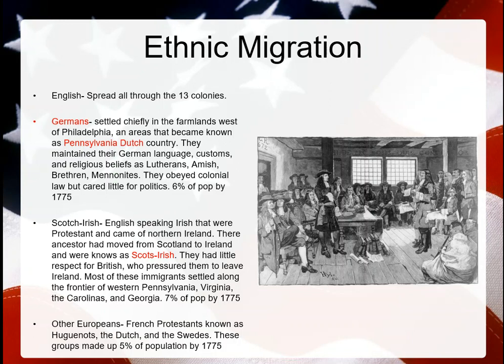Other Europeans include French Protestants, also known as Huguenots, who came over for religious freedom. They were followers of John Calvin — very similar to the Puritans and Separatists who also trace their roots to Calvin. You also have the Dutch and the Swedes coming over. A lot of people see great opportunity here and want to take advantage of it. Together these other Europeans make up about 5% of the population.